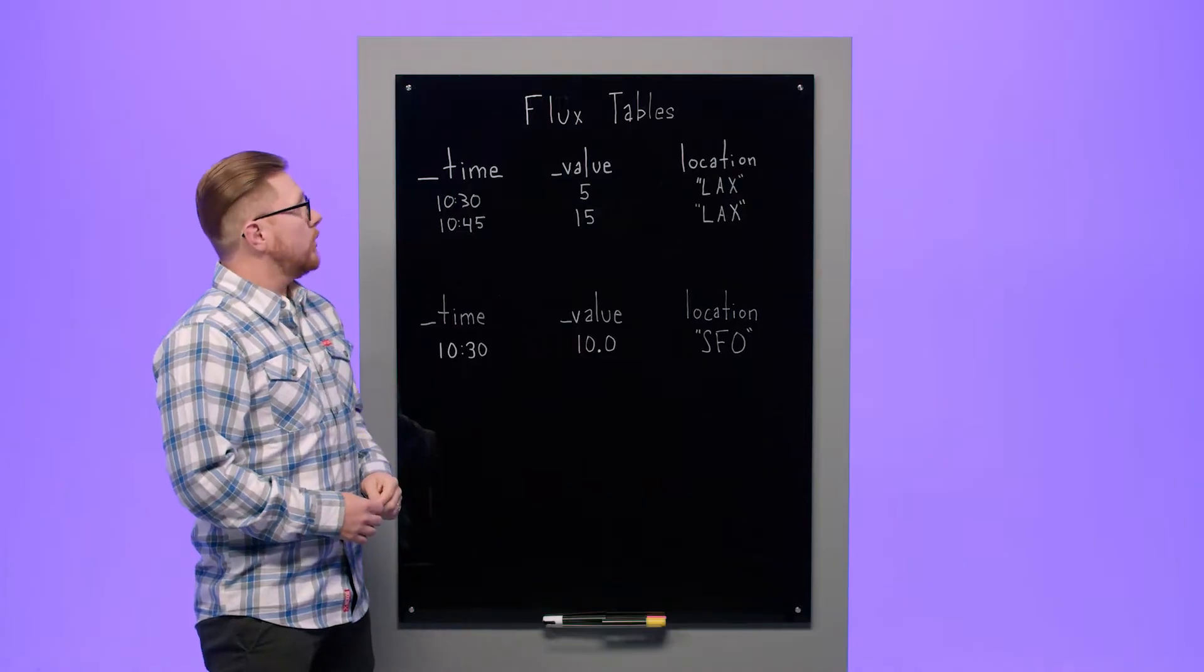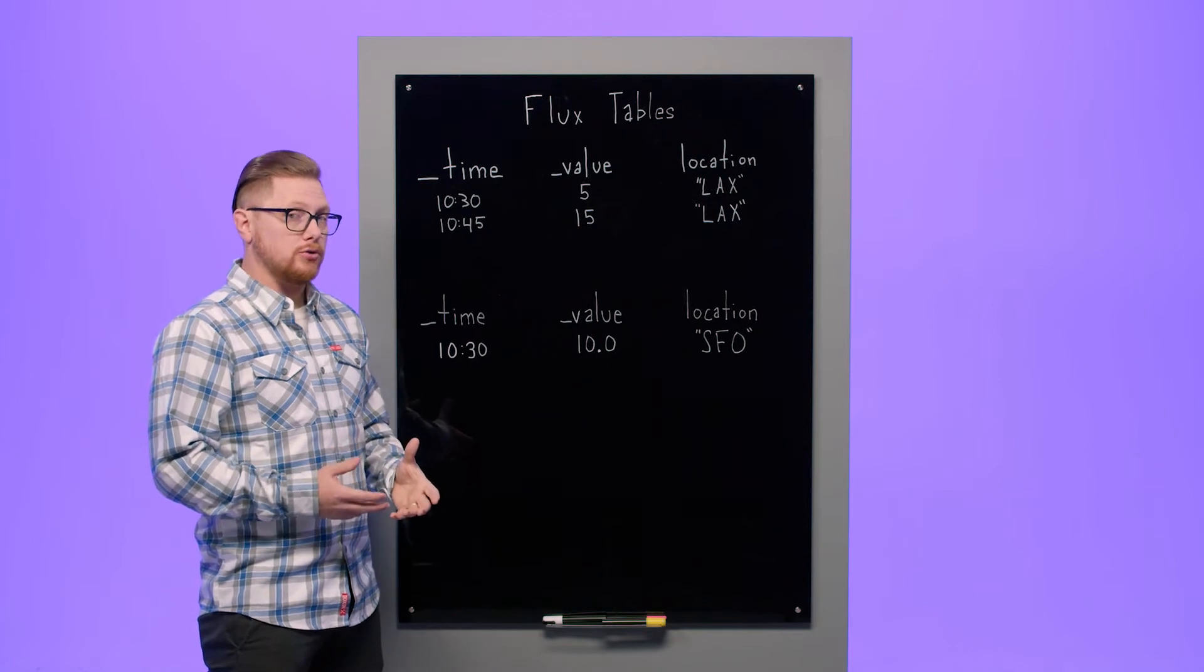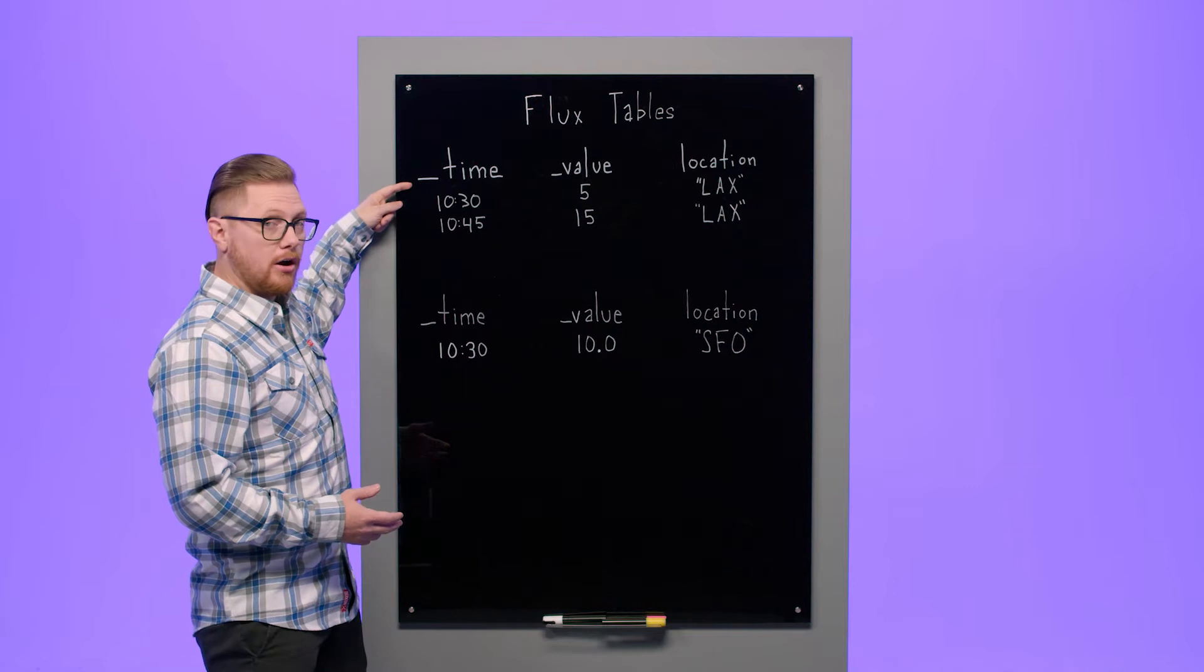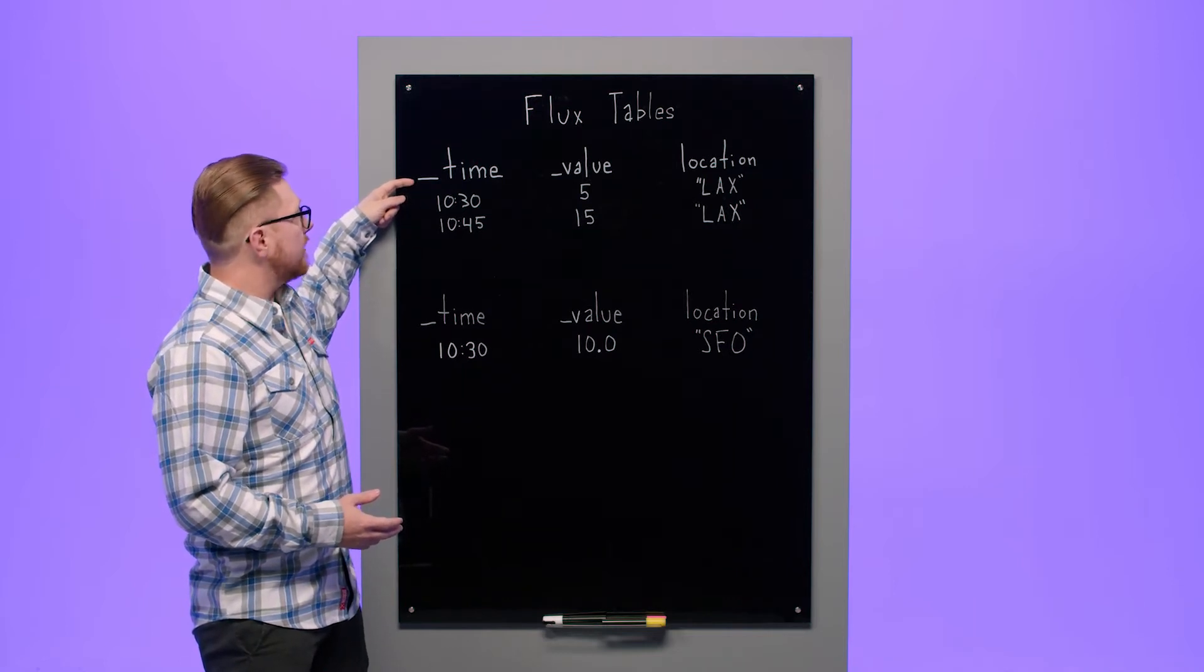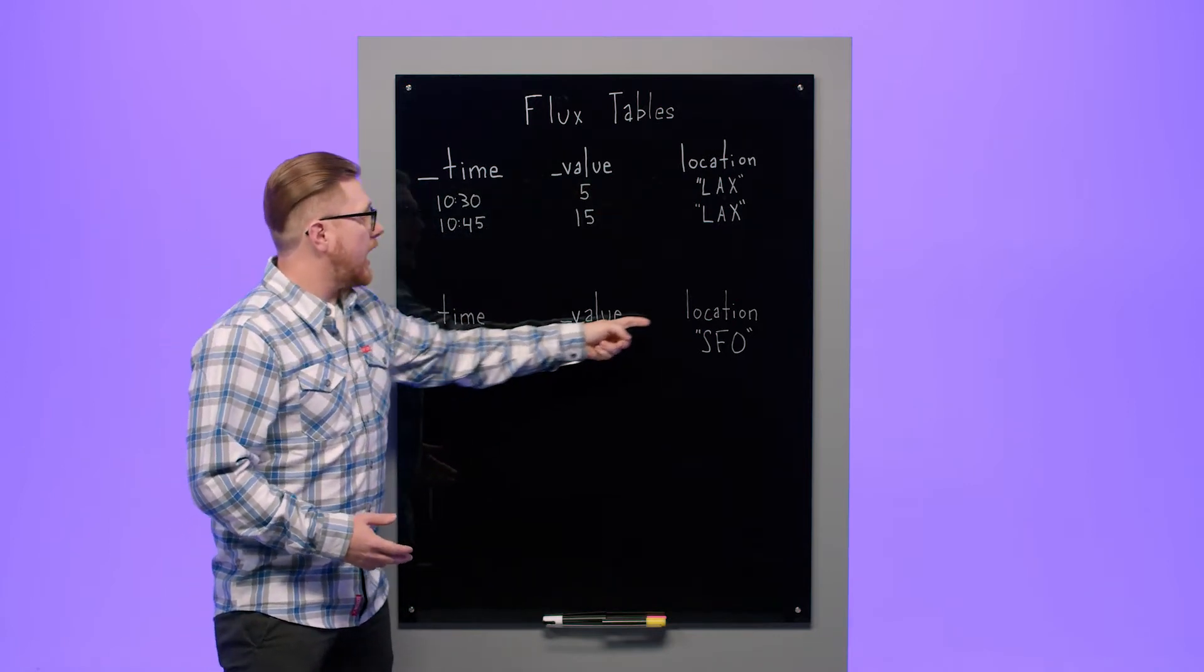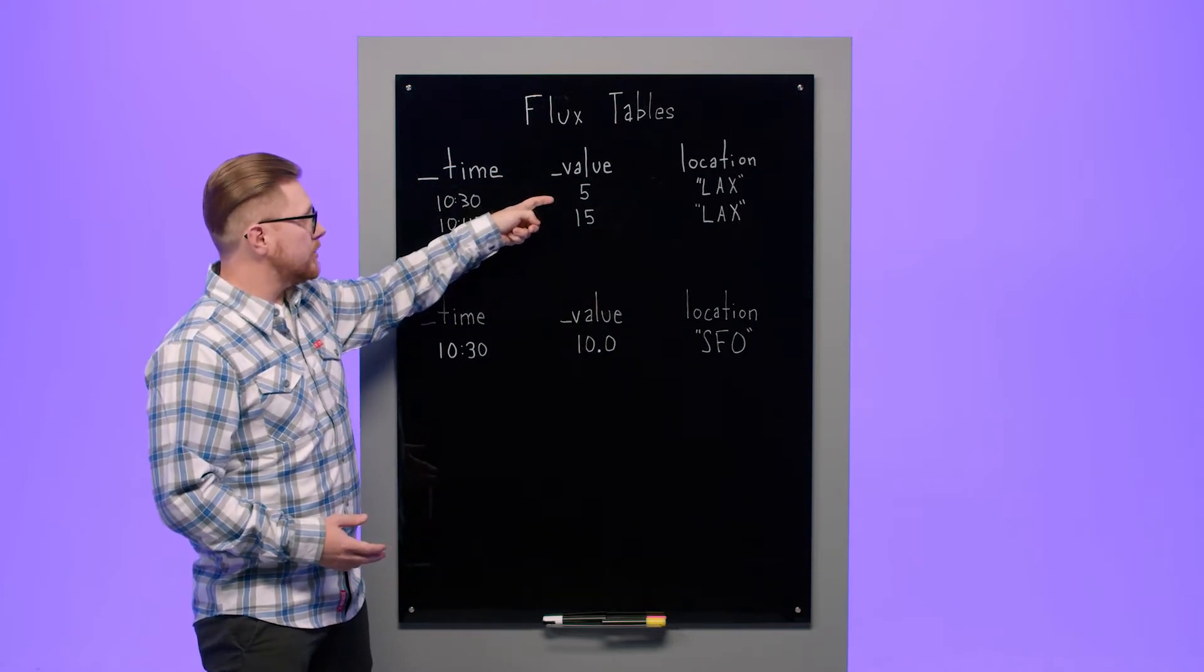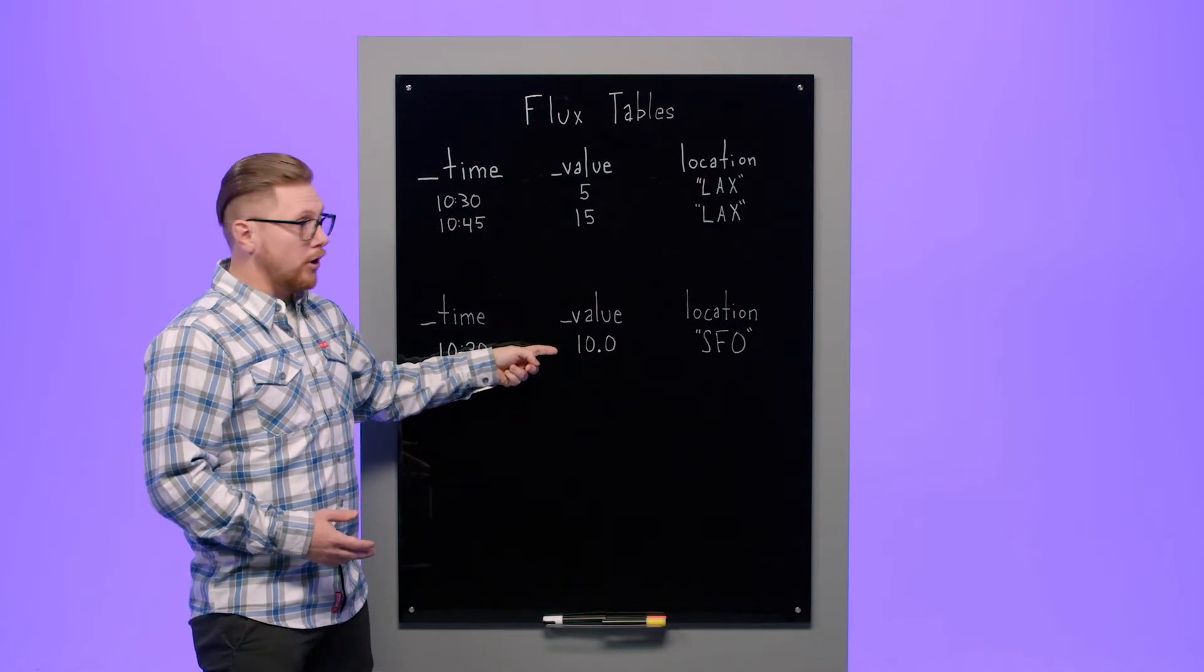In this example we have two tables that would appear to be the same if you thought of them as just a key value store. However, each table has a name for the column as well as a type. In this situation we have a time, a value, and a location between both table A and table B. However, the type of value in table A is an integer while the type of value in table B is a float.